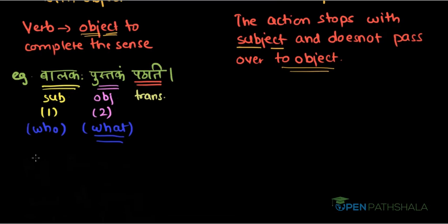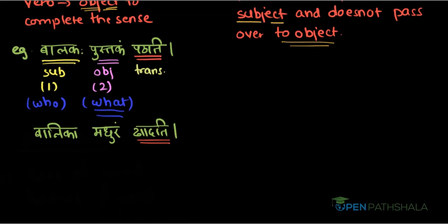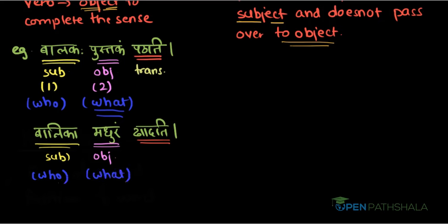Let us take another example: Balika Madhuram Khadati. Who is eating? The answer is Balika — that is our subject. What is the girl eating? The answer is Madhuram, meaning sweet — that is our object. So again, both questions 'who' and 'what' are answered. Since we get an answer to 'what,' the verb Khadati is a transitive verb. Whenever we ask 'what' to a verb and get an answer, that verb will always be transitive.